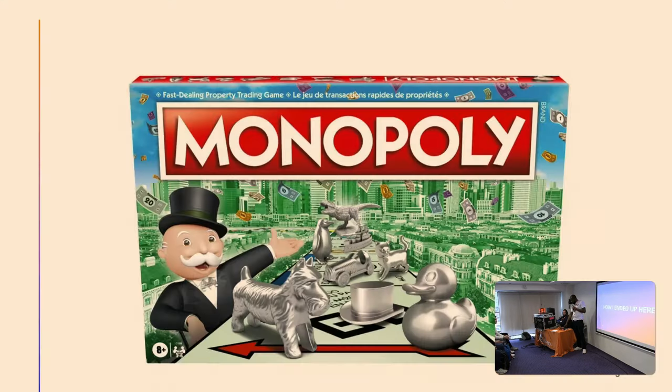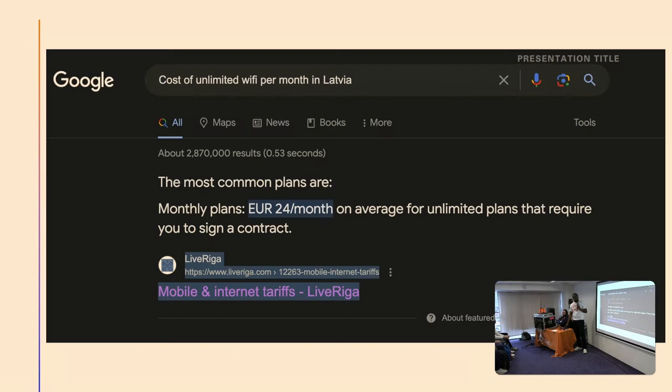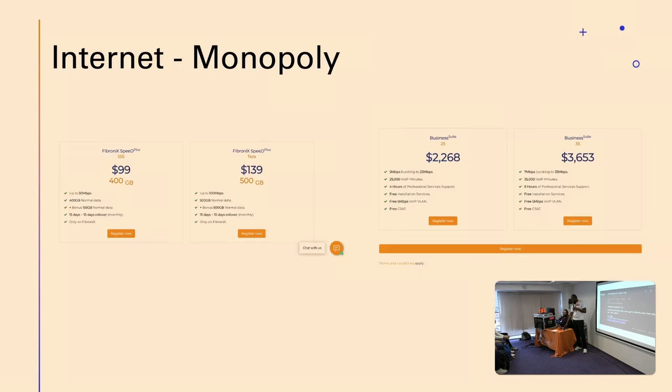In my country, we have a monopoly in things. Just to give you some context, I did a little Googling to see how much internet costs here. That's 24 euros a month, which is I don't know, 25 or 26 dollars US. But in my country, that's the internet price. The reason why they're able to do this is because there's a monopoly. They're the only ones who give good speed internet, so they can charge these ridiculous prices.